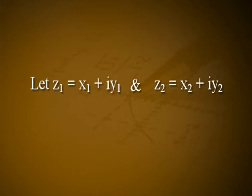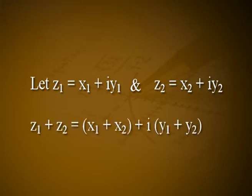The additive property of the exponential function states that eᶻ¹ · eᶻ² = e^(z₁+z₂). This can be verified by taking z₁ = x₁ + iy₁ and z₂ = x₂ + iy₂, so that z₁ + z₂ = (x₁ + x₂) + i(y₁ + y₂). Then eᶻ¹ · eᶻ² = e^(x₁+iy₁) · e^(x₂+iy₂) = e^(x₁+x₂) · eⁱ⁽ʸ¹⁺ʸ²⁾ = e^(z₁+z₂).